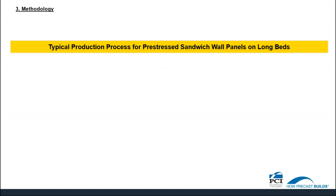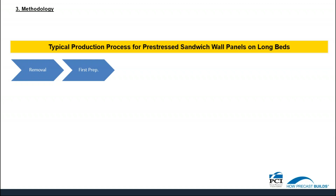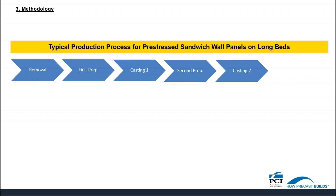To illustrate step one in the methodology, let's walk through an example of a production process. This can be used for any production process, but for the example we will use wall panel production for long bed as shown in the slide. You can apply the methodology to any product you manufacture at your plant. We start with removal, followed by first prep, first casting, second prep, second casting, and finishing, and the elements involved in each of these steps.